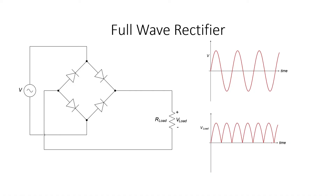Now let's take a look at a more complicated circuit with four diodes in order to take care of the other half of that cycle. This circuit is called a full-wave rectifier. You need four diodes instead of just one. Let's see what happens when the source voltage V is on the positive half cycle and the negative half cycle.